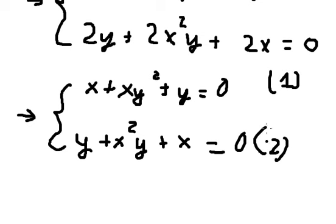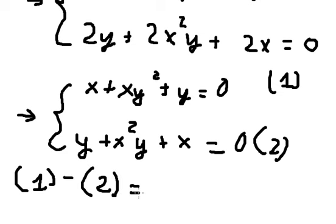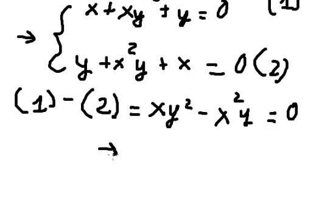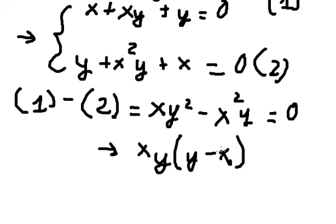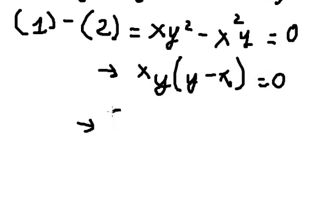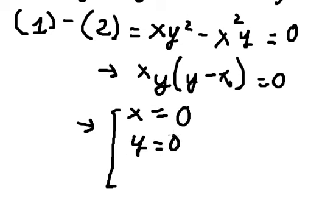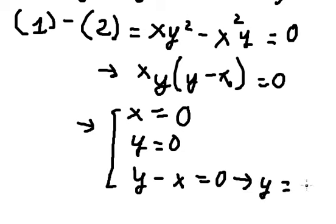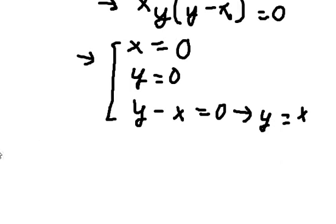Now I will put equation number 1 minus equation number 2. So we know that x minus x cancels, and y minus y cancels. So we just have this one. Now we can do factorization, and we can see that we have 3 solutions: x equals 0, y equals 0, and y minus x equals 0, which means y equals x.